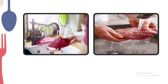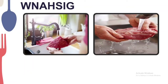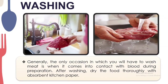What is our first basic preparation method of meat? Based on the picture, it is washing. Generally, the only occasion in which you will have to wash meat is when it comes into contact with blood during preparation. After washing, dry the food thoroughly with absorbent kitchen paper. In our public markets here it is important to wash the meat before cooking to make sure it is clean.